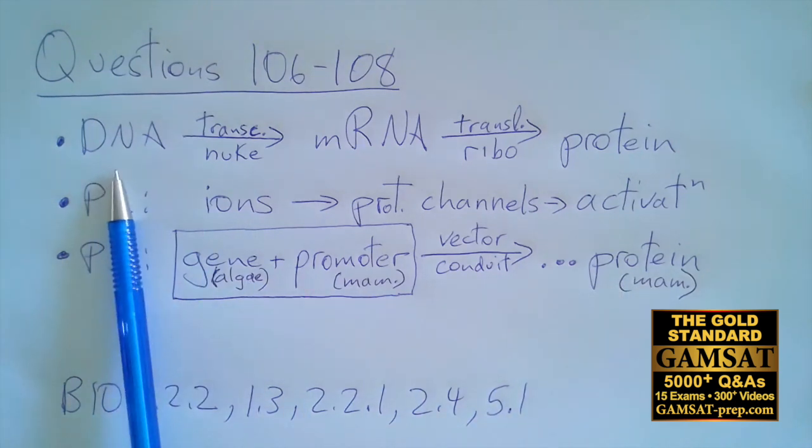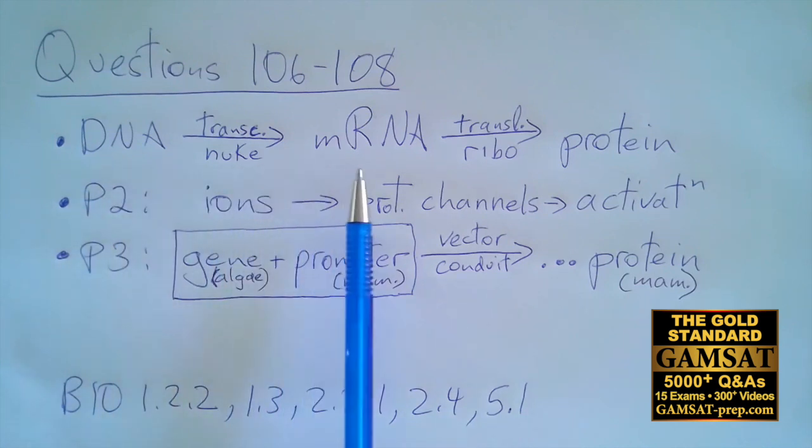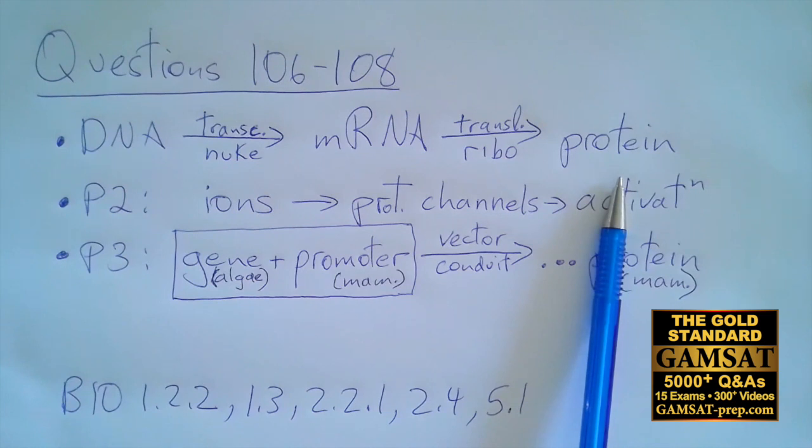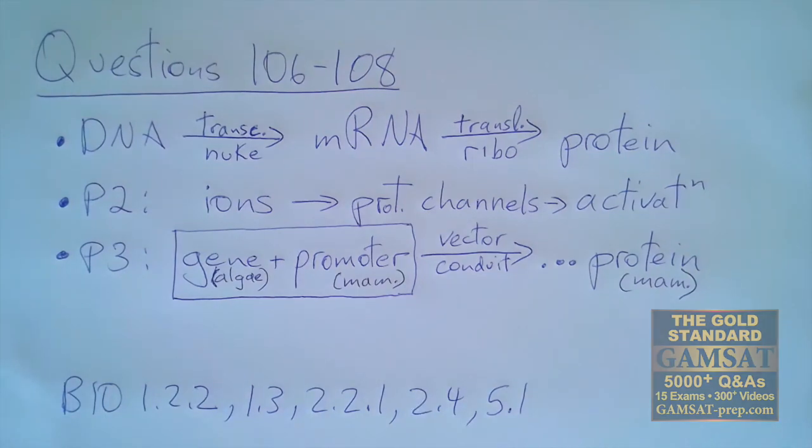This is the basic idea of DNA being transcribed into messenger RNA and then translated into the protein. And this entire passage is based on the objective of light-sensitive channel proteins in the membranes of certain cells. And so for question 108, the answer is D. And here are some references that you can read in the gold standard book.